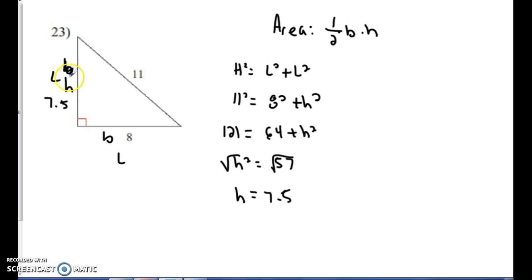So I know the height, and I know my base, and I know area is half base times height. So I'm going to take one half of my base, which is 8, and multiply it by my height, which is 7.5. So I'm going to take 4 times 7.5, and I get it to be 30 units squared. So that's what the area of this triangle is.